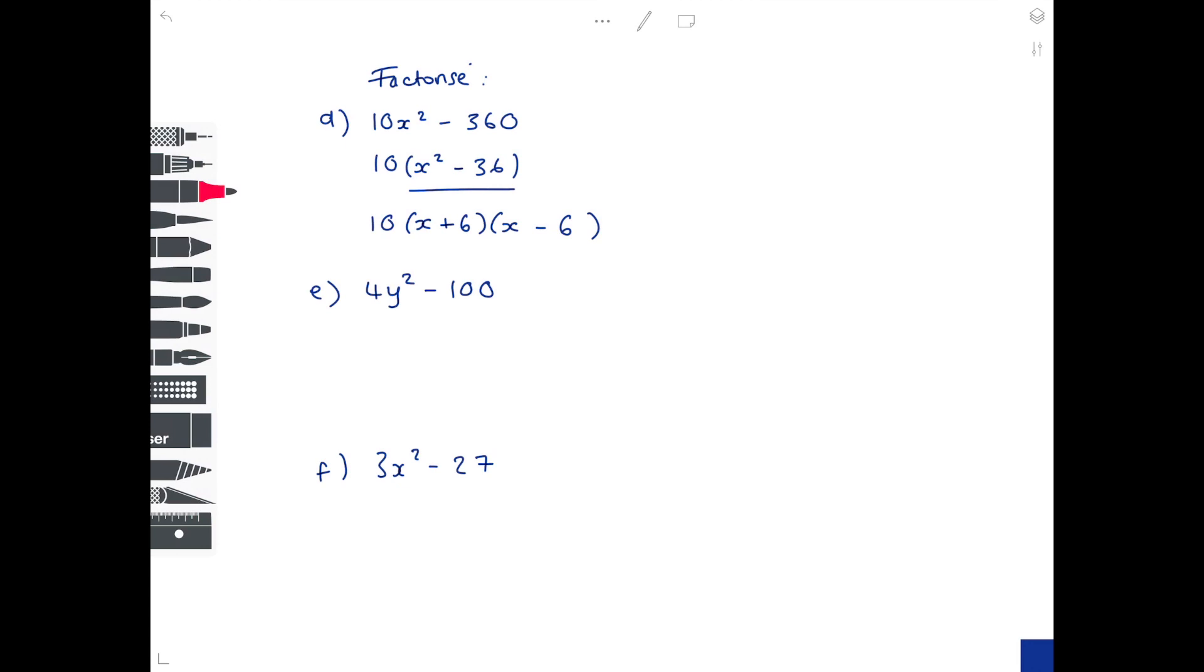Looking at e) 4y squared minus 100. What is the common factor for both terms? Well it is 4. So what do we multiply 4 by to get 4y squared? It's just y squared. What do we multiply 4 by to get minus 100? That's minus 25. So we can see we have a difference of two squares again. So let's do our two brackets, a y at the front of the bracket, a plus and a minus. What number multiplied by itself equals 25? Well that is 5. So that's our final answer.